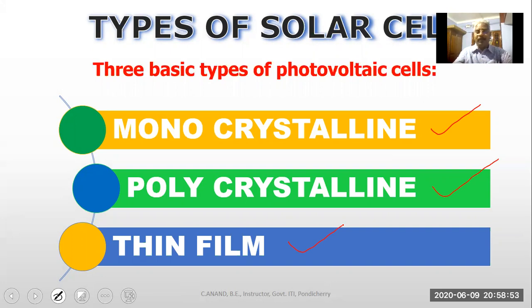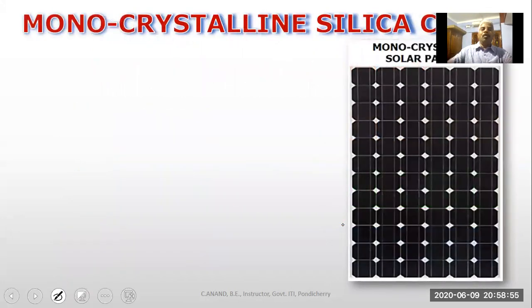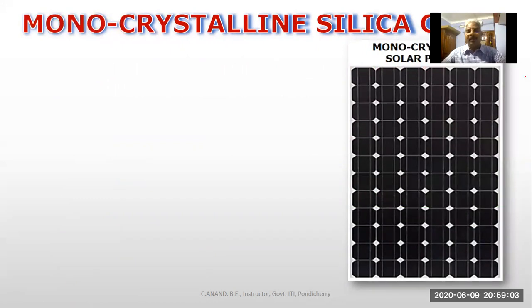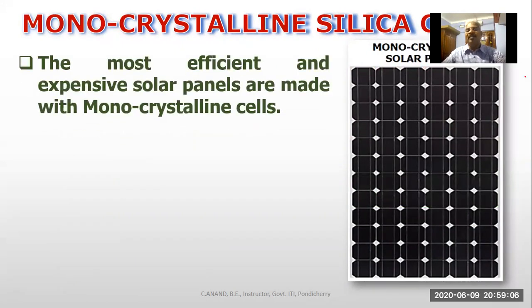Now we will talk about monocrystalline silica cells. The most efficient and expensive solar panels are made with monocrystalline cells. This is a monocrystalline silica cell type.